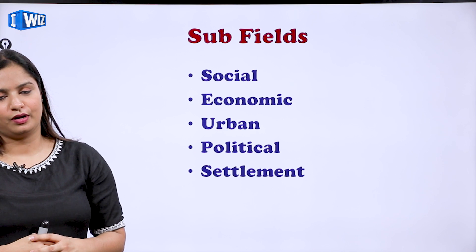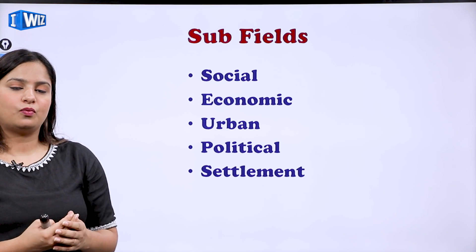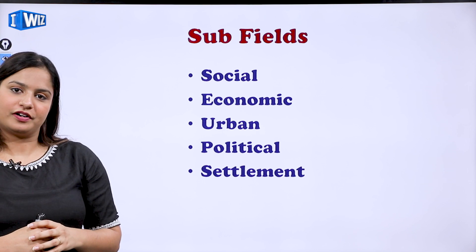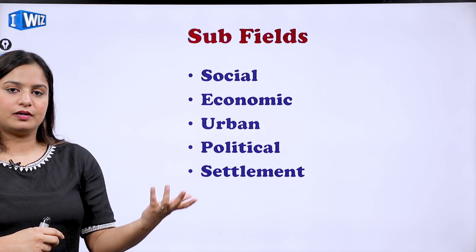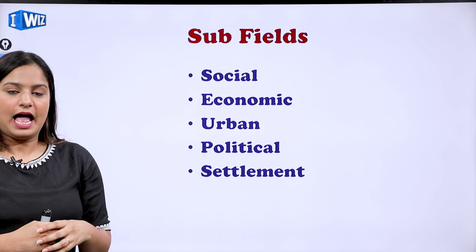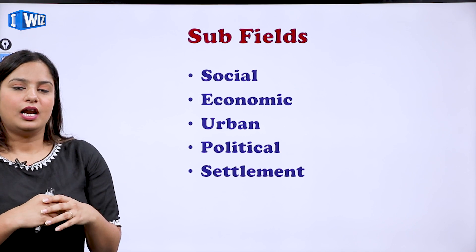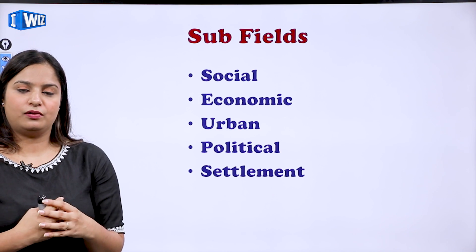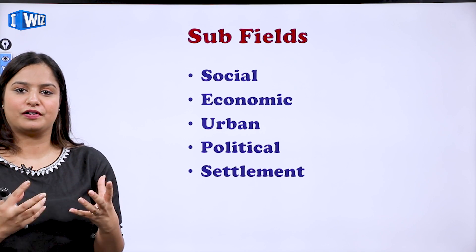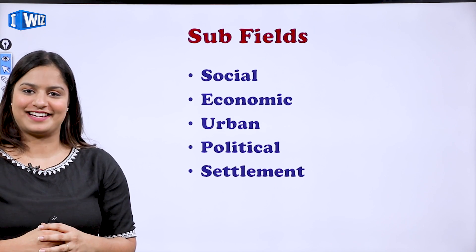So this is what human geography and its scope is all about. You got to know about how geography evolved, the relationship between human and geography, determinism, neo-determinism, and possibilism. It's not that difficult — if you try to love geography, geography will love you back. Thank you so much, I'll see you in the next class.